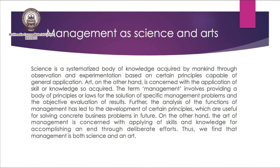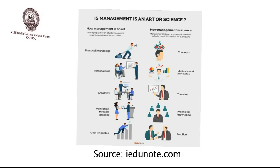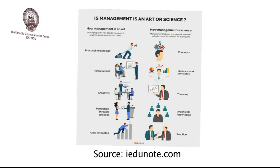Because of this, we consider management as both science and an art. From this diagram, you can see that management requires both science as well as arts. The components of science that we require include concepts, methods and principles, theories, organized knowledge, and practices.